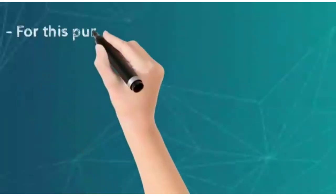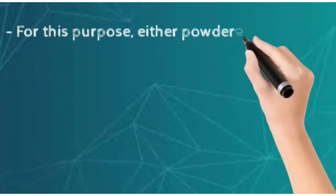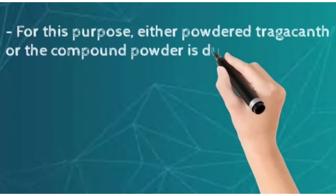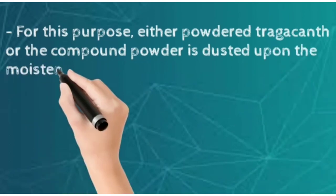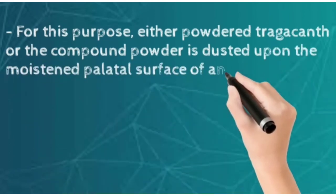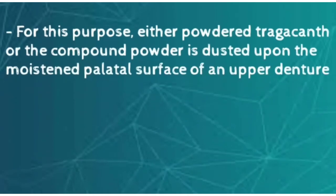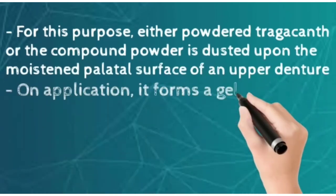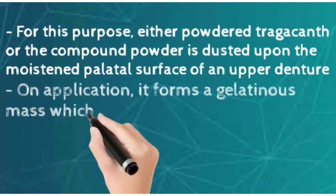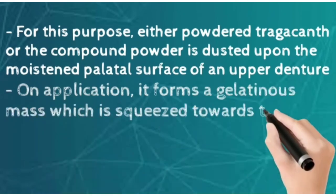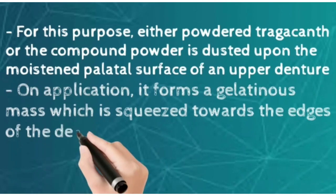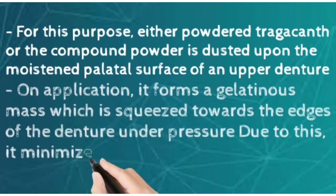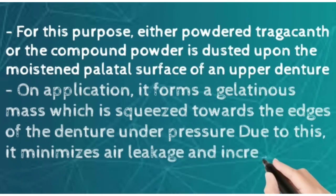For the purpose of denture fixation, either powdered tragacanth or a compound powder is dusted upon the moist palatal surface of an upper denture. On application, it forms a gelatinous mass which is squeezed towards the edges of the denture. Under pressure, this prevents air leakage and increases adhesion by suction.